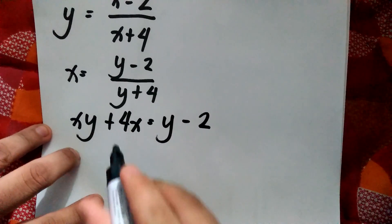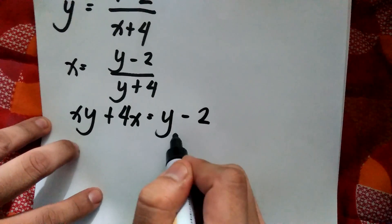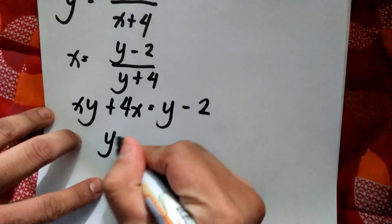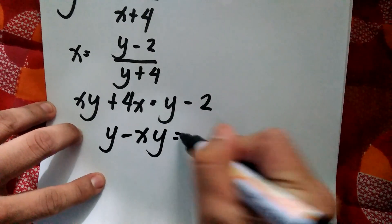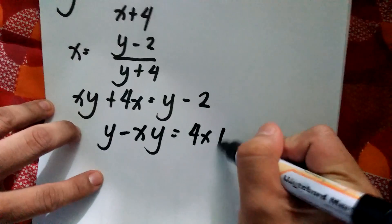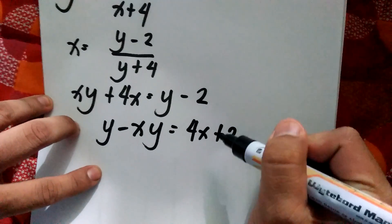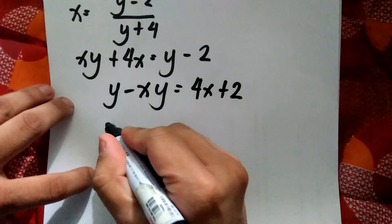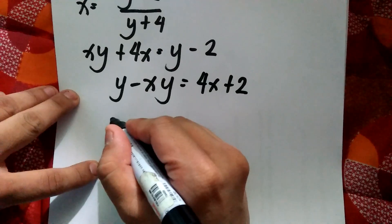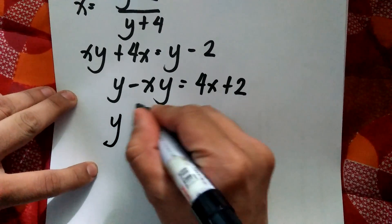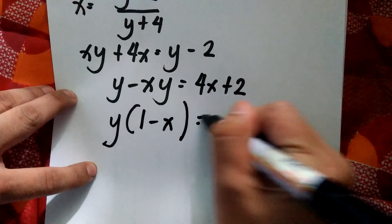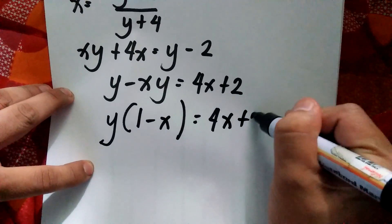Then we group those with y terms. It will become y minus xy equals 4x plus 2. Then we will factor out y since we are solving for that variable. This will be y times 1 minus x equals 4x plus 2.